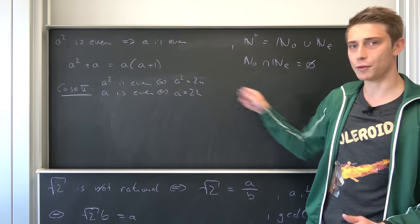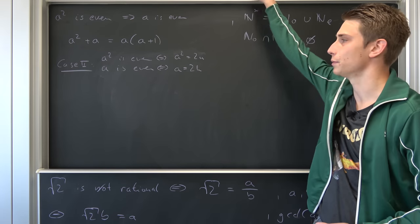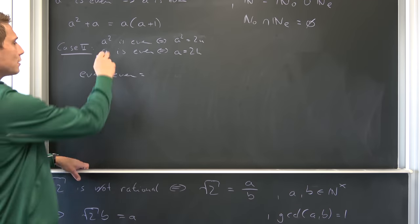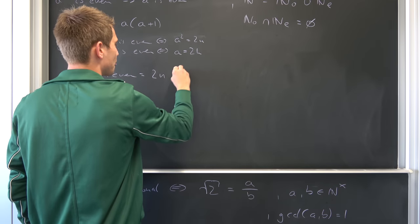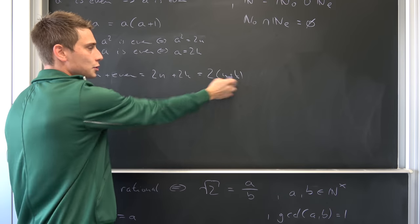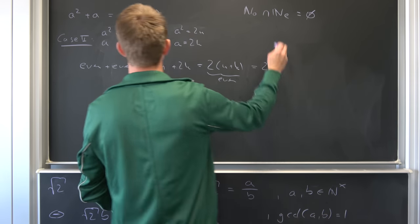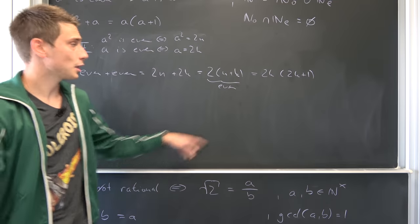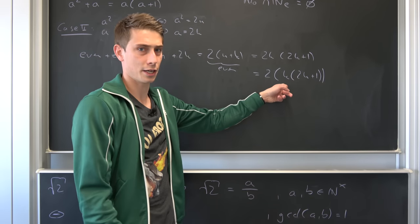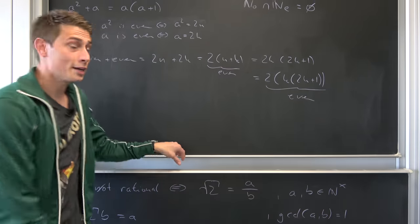Case two: a is even. Now a squared plus a is even plus even, which is two times n plus two times k — factoring out two gives two times (n plus k), which is even. And from the other side, a times (a plus one) equals two times k times (two times k plus one), factoring out two gives two times k times (2k+1), which is also even. This does not lead to a contradiction, so we have shown that a squared even implies a is even.